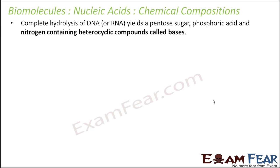Now let us talk about the nucleic acid compositions. Complete hydrolysis of DNA or RNA yields a pentose sugar, which can be a ribose or a deoxyribose sugar, a phosphoric acid — that is the phosphate group — and nitrogen-containing heterocyclic compounds called nitrogenous bases. Nucleic acids are formed by dehydration synthesis and the simpler substances are obtained by hydrolysis.